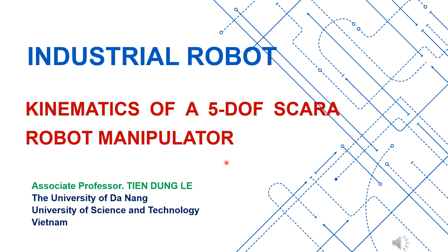Hello everyone. This lecture presents an example of applying the modified Denavit-Hartenberg method to solve the kinematics problem of a 5-degree-of-freedom SCARA serial robot. The process includes steps for attaching coordinate frames and formulating the forward kinematics equations. Following that, we derive the equations to solve the inverse kinematics problem to find the joint variables of the robot. The equations are structured in a general form, making them easily applicable in programming. Verification calculations carried out on a MATLAB M-file demonstrate the correctness of the method. The results of this example are valuable in helping students better understand kinematic calculations and can also be used in applications for developing robot calibration algorithms or trajectory control for a 5-degree-of-freedom robotic arm.